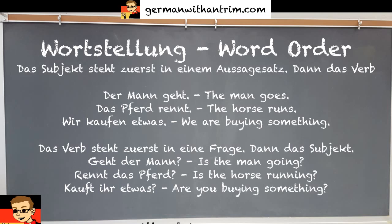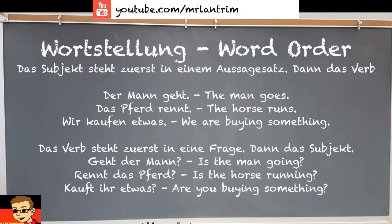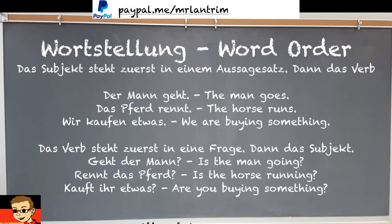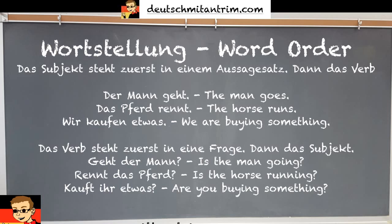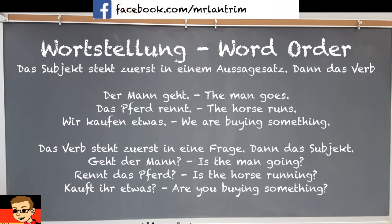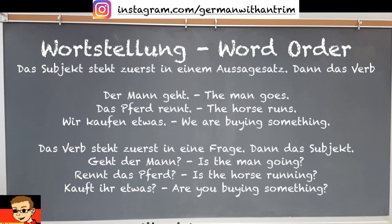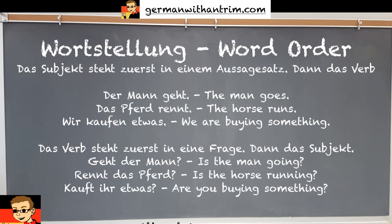Word order: In a statement (Aussagesatz), the subject comes first and the verb is in second position. Examples: 'Der Mann geht' — the man goes. 'Das Pferd rennt' — the horse runs. 'Wir kaufen etwas' — we are buying something. In a question, the verb comes first and the subject comes after: 'Geht der Mann?' — is the man going? 'Rennt das Pferd?' — is the horse running? 'Kauft ihr etwas?' — are you buying something?